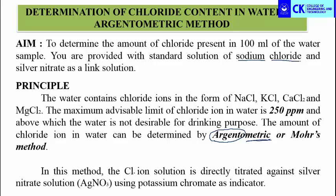This method is also called Mohr's method. The German chemist named Karl Friedrich Mohr invented a direct titration method in which silver nitrate is used as titrant, chloride solution is used as analyte, and potassium chromate is used as indicator. By this method, he determined the end point: when all chloride ions are consumed by silver ions, a reddish brown precipitate is formed by the reaction of silver ion with chromate ion.